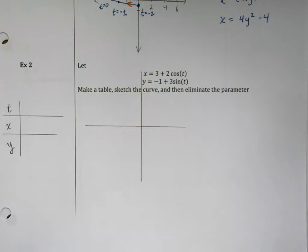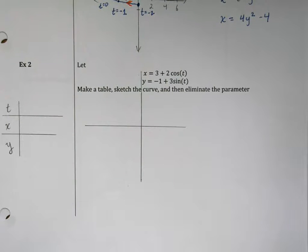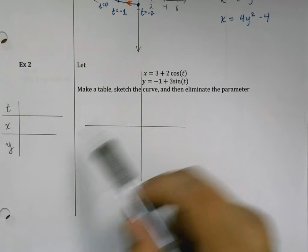Hello calculus students, welcome to the continuing video on examples of parametric curves. This time we're going to look at a parametric curve that has trigonometric functions as a way to generate it. I've made my table and I'm going to plug in some values here for t.